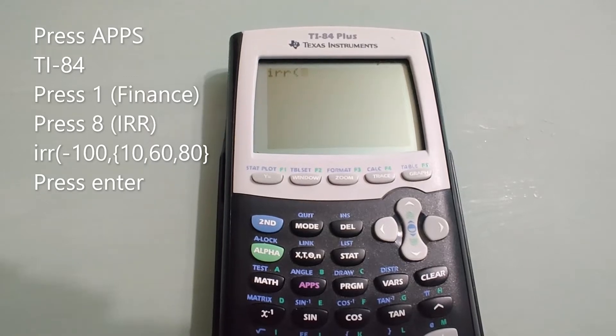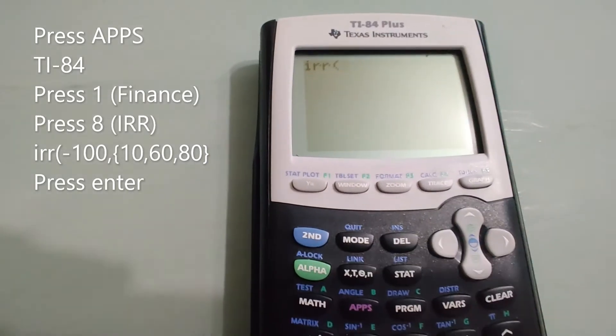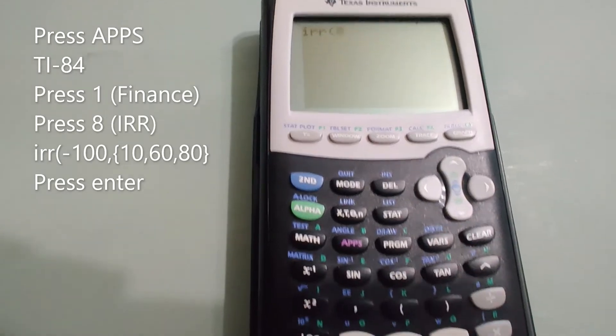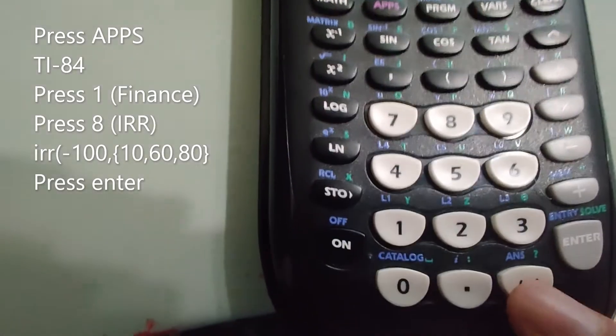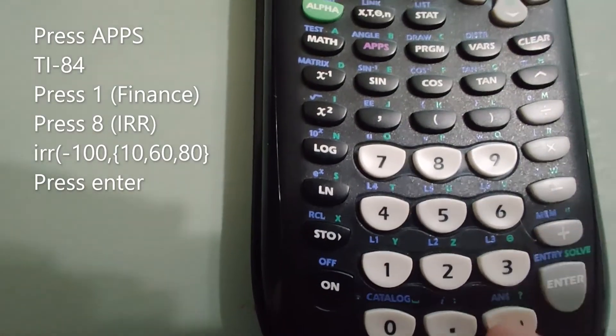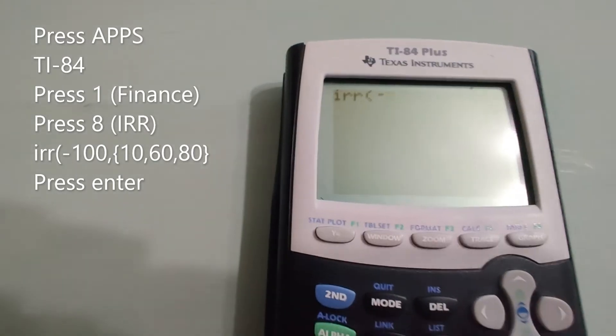Now you're gonna input the initial investment. In this case is 100. So you input negative using this, not the minus. So negative 100.